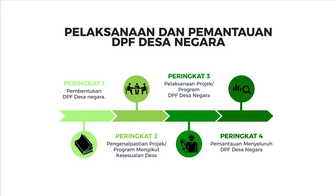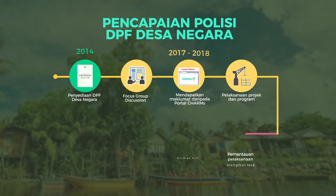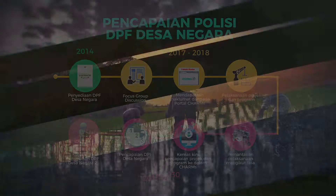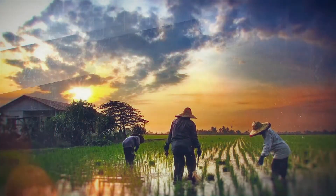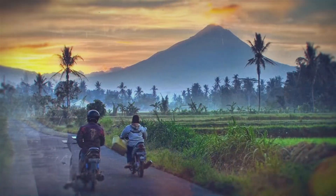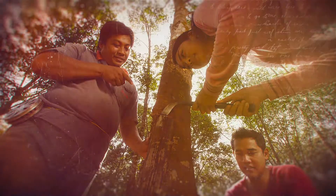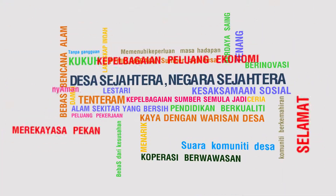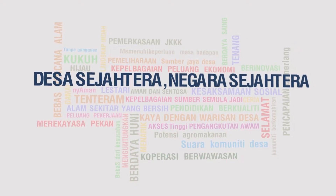DPF Desa Negara yang digubal dan disokong oleh Sistem CHAMS dan Sistem Grid Desa akan dilaksana dan dipantau mengikut tiga fasa pelaksanaan. Pemantauan DPF Desa Negara akan dibuat pada tahun 2019, iaitu selepas dua tahun DPF Desa Negara dilaksanakan. Diharap penggubalan DPF Desa Negara dapat mengatasi isu utama perancangan dan pembangunan desa di Malaysia, terutamanya dalam merapatkan jurang pembangunan di antara kawasan bandar dan desa. Desa Sejahtera, Negara Sejahtera.